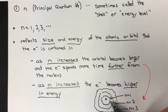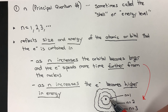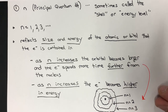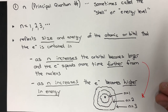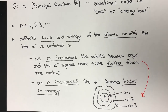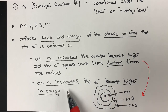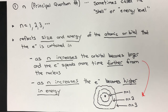Looking at the familiar Bohr model sketch, the first energy level is n equals one, the second energy level is n equals two, and the third energy level is n equals three. The other thing to note is that as n increases, the electron becomes higher in energy.